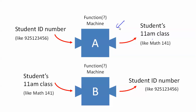It turns out that machine A is indeed a function because student ID numbers should be unique. So for any student ID number we should know what the student's 11 a.m. class is, and if we put in a student ID number again, we're going to get the same output the second time. Machine B is not a function because if we put in Math 141 as the input, we're probably going to get a whole bunch of different outputs — because there's probably a whole bunch of students all taking Math 141 at 11. So only the first one is a function.